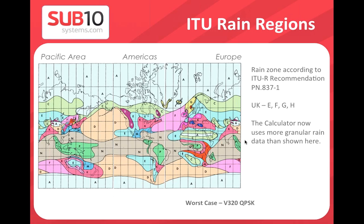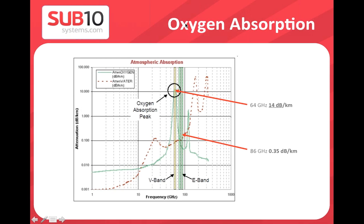V-band summary: countries are classified by ITU rain zones. Looking at the oxygen absorption graph — the green line shows that at 60 GHz V-band, the oxygen peak is about 14 dB/km. For E-band systems at 70–80 GHz, oxygen absorption is only 0.35 dB/km — a significantly lower attenuation compared to V-band.